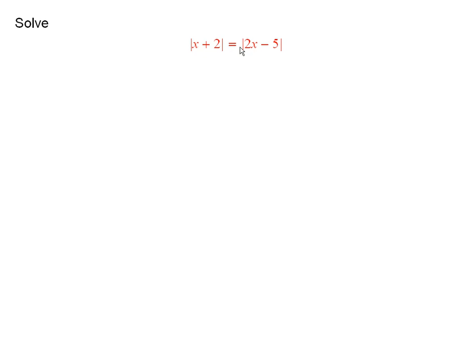We want to solve this equation here. Now, when you say the absolute value of this is equal to the absolute value of this, what you're really saying is that the two numbers, this one and this one, are at the same distance from zero.